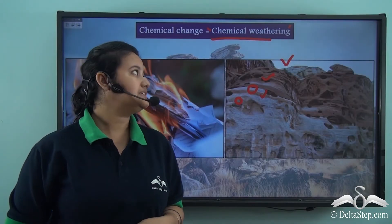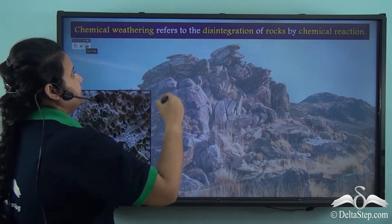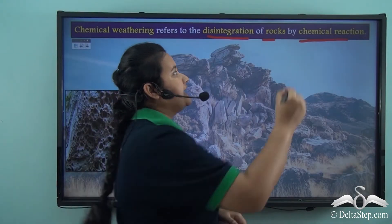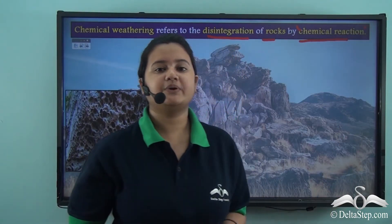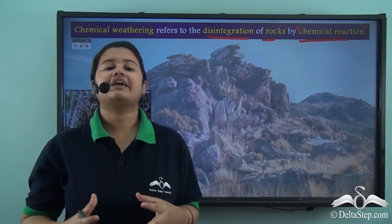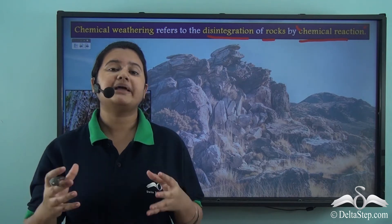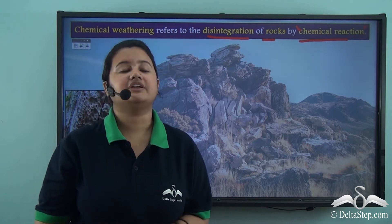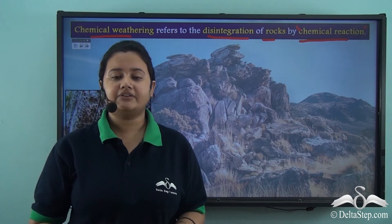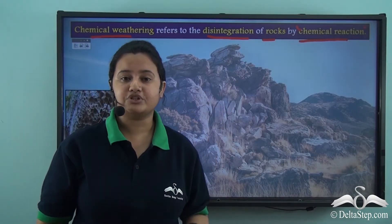In today's video we will discuss chemical weathering in detail. Chemical weathering refers to the disintegration of rocks by chemical reaction. Chemical reaction takes place between the minerals present in the rocks and atmospheric conditions like rain water. So when the chemical composition of rocks changes due to atmospheric conditions, the rocks become weak and they disintegrate — this process is known as chemical weathering. Unlike physical weathering, chemical weathering not only means disintegration or breaking down of rocks but it also involves a change in the chemical composition of the rocks.